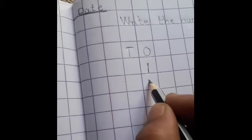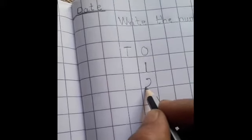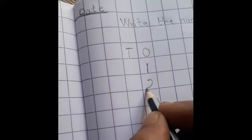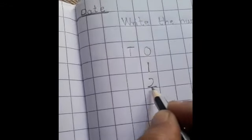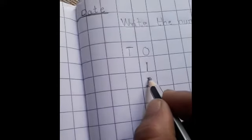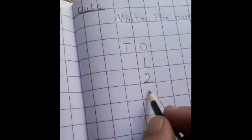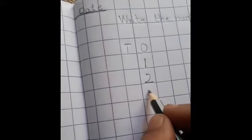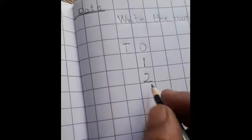Now Number 2. Again you have to start from middle of the square. And left curve and slipping line up to this downside line. It become Number 2.